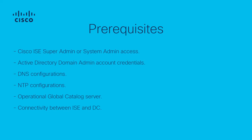An active NTP connection must also be in place on the ISE server to synchronize time between ISE and the domain controller. Keep in mind that the time difference between ISE and the domain controller cannot exceed 5 minutes. The domain join could fail if the difference is greater than 5 minutes.